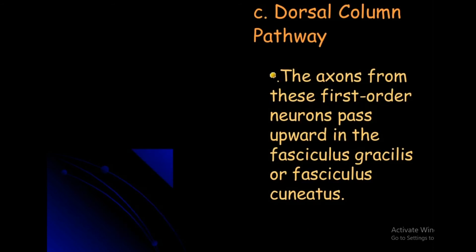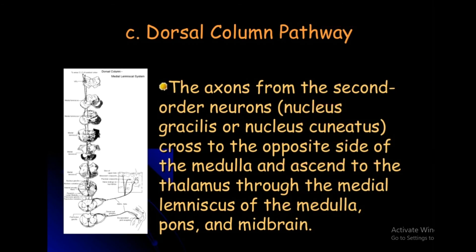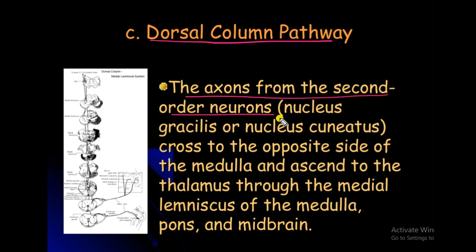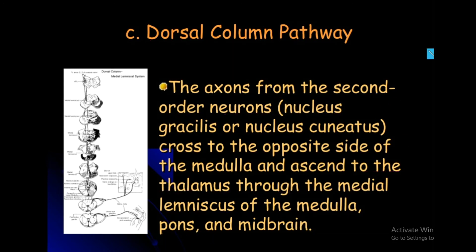In the dorsal column pathway, the axons from these first order neurons pass upward in the fasciculus gracilis or fasciculus cuneatus. The axons from the second order neurons, nucleus gracilis or nucleus cuneatus, cross to the opposite side of the medulla and ascend to the thalamus through medial lemniscus of the medulla, pons, and midbrain.